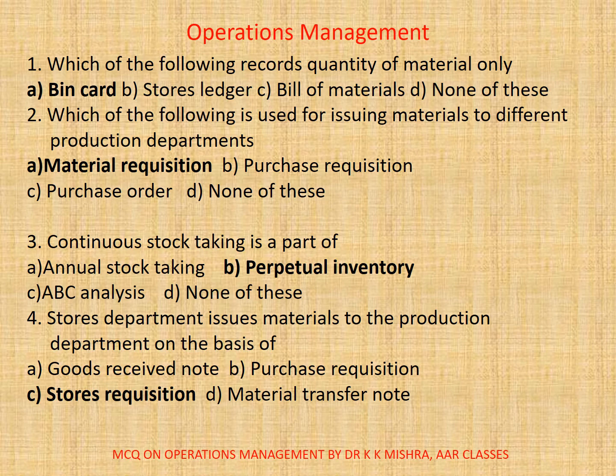2. Which of the following is used for issuing materials to different production departments? Options are A. Material requisition. B. Purchase requisition. C. Purchase order. D. None of these. The correct option is A. Material requisition.